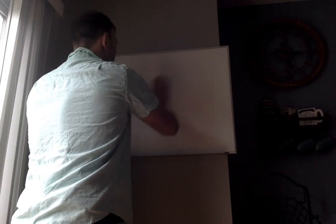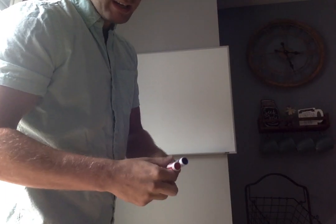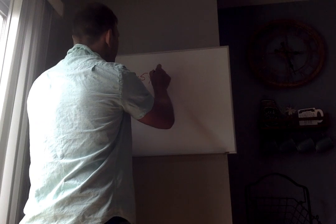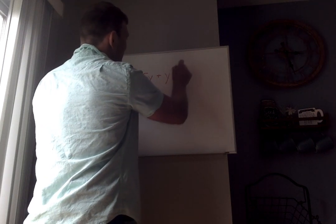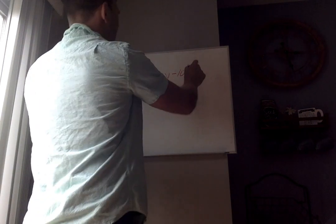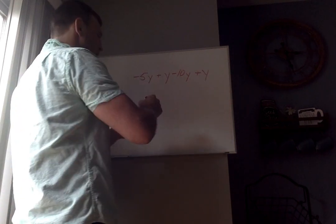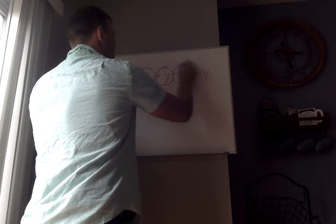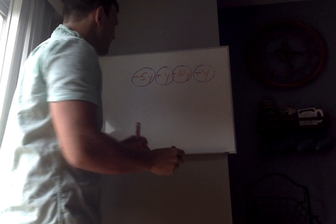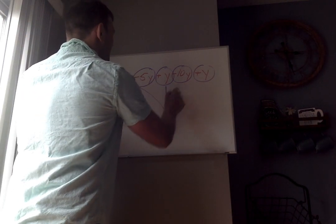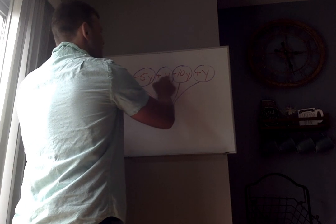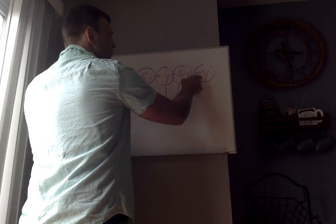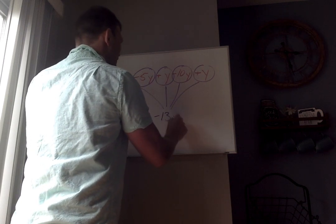And now we have another problem here. We have negative 5y plus y minus 10y plus y. So now everything has a y, so it's all like terms. So I'm going to take each thing, the sign in front, and combine them together. So I have negative 5 plus 1, that's negative 4, minus 10 is negative 14, plus 1 is negative 13. So it's negative 13y.